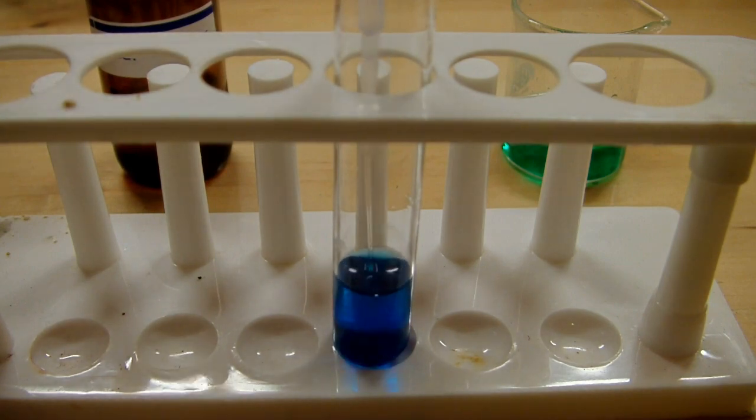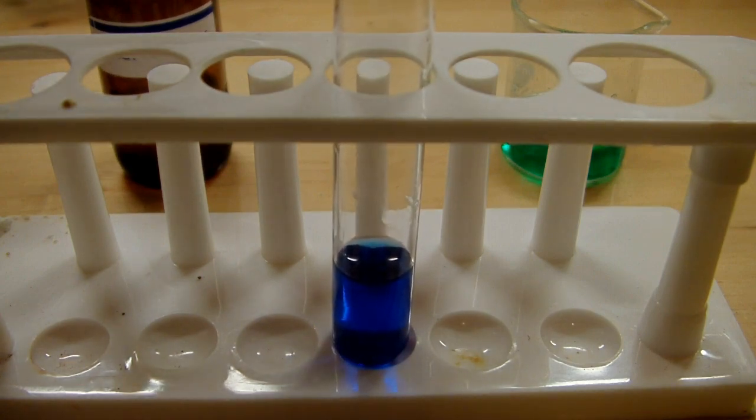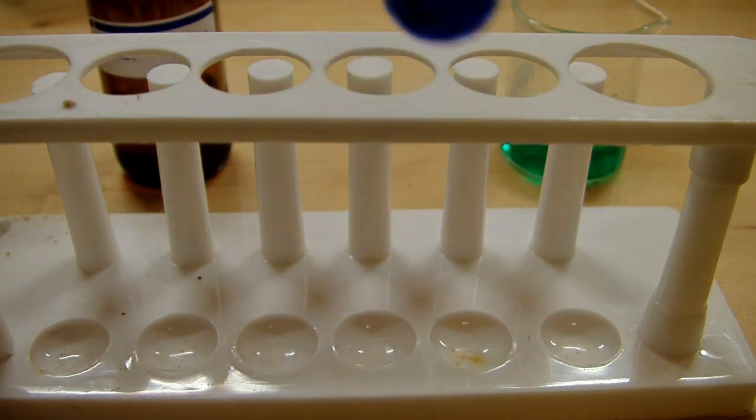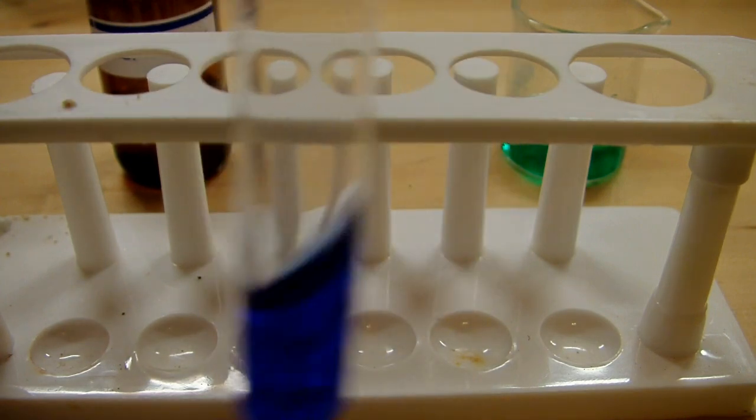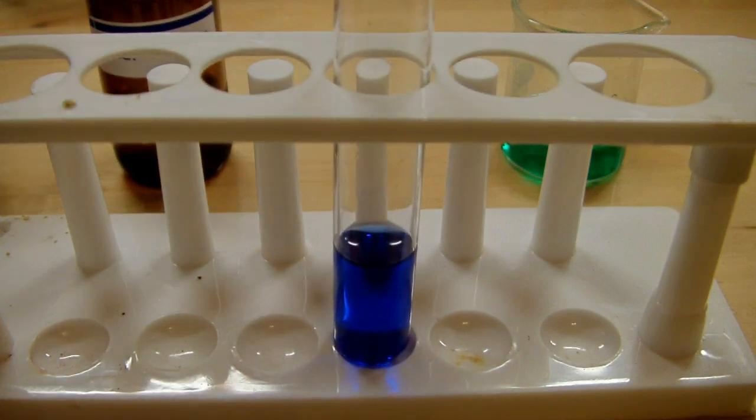So let's do a third milliliter, and why not, we'll do a fourth as well. Now you can really see the very deep blue coloration. This is from the ammonia complexing with the nickel chloride.